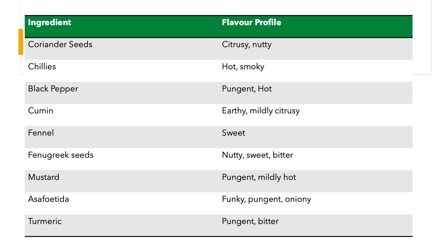It's worth spending time understanding the flavor profiles of spices, as this vocabulary helps you think about how you want your spice mixes to taste. A coriander seed has a citrusy, nutty flavor. Chilies — the round variety has a hot and smoky flavor, while the long variety is just hot without smokiness. Black pepper is pungent and hot. Cumin has an earthy, mildly citrusy flavor. Fennel has a sweet, licorice-like flavor — which is why it's used as an after-dinner mouth freshener. Fenugreek has a nutty, sweet, and yet bitter flavor.